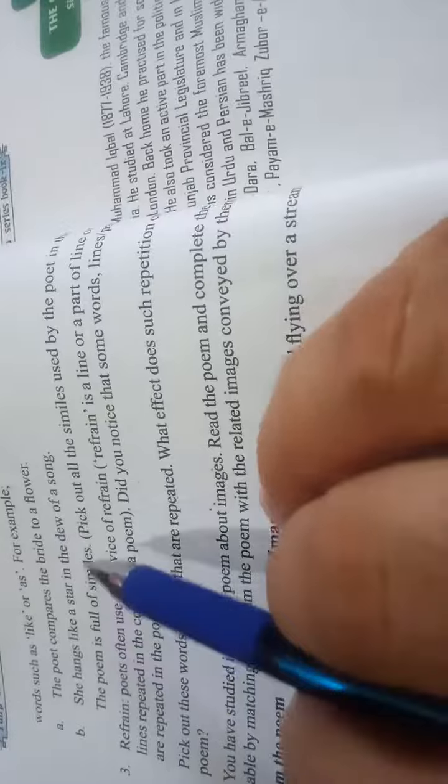So what are the similes used by the poet? Similes in the poem are like flower, like a bird, floats like a laugh, like a pearl, like a star, like a beam, like a deer. So these are the similes that the poet has used in the poem.